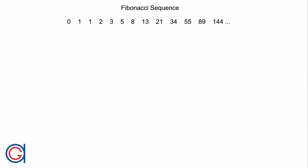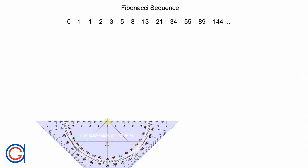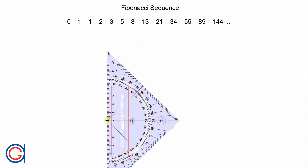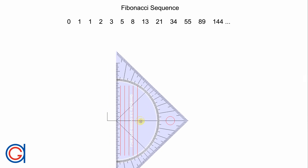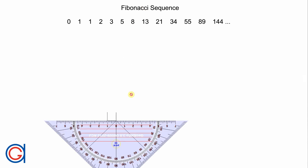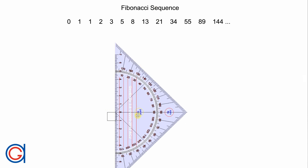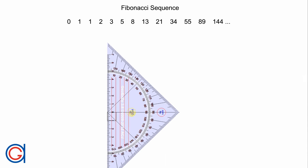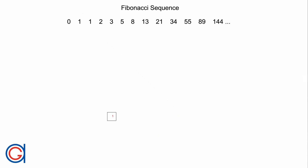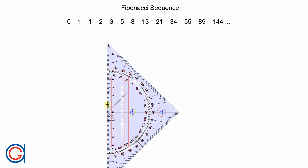So now we are going to start to construct the Fibonacci spiral using the Fibonacci sequence as the lengths of the sides of successive squares. We start by drawing a square in the center of the screen with a side of one centimeter. We are going to draw the successive squares in a clockwise direction — you can also do it anti-clockwise, but we are going to do it clockwise here. We will construct the second square on top of the first square, again with a side of one centimeter.